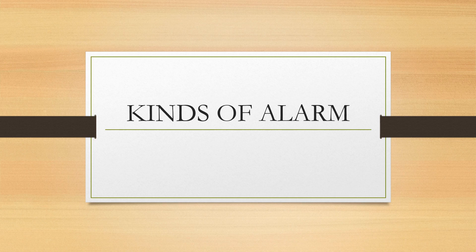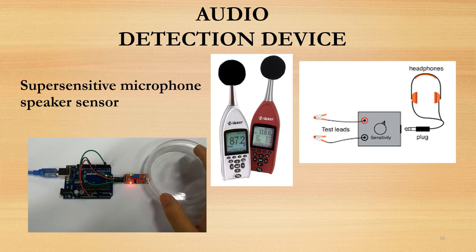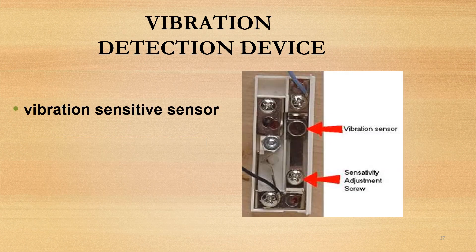Next topic: kinds of alarm. Audio detection device — a super-sensitive microphone speaker sensor is installed in walls, ceilings, and floors of the protected area. It will detect any sound caused by attempted forced entry, as inspected by the sensor.